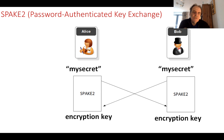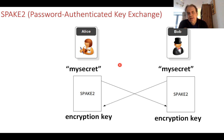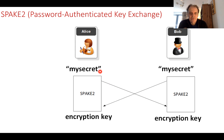Another method we can use is called SPAKE, which uses a password key exchange. In this scenario, Alice the client wants to show Bob that she still knows her password. We don't want to communicate the password over the wire, but both Bob and Alice will know what the password actually is.